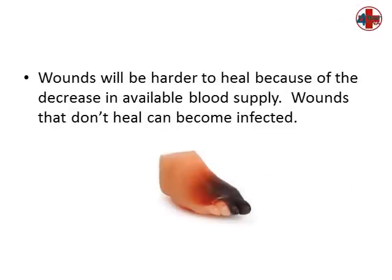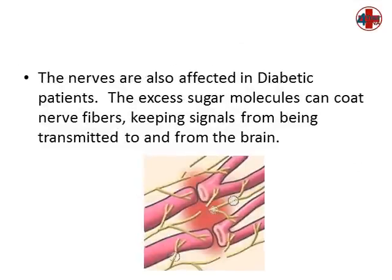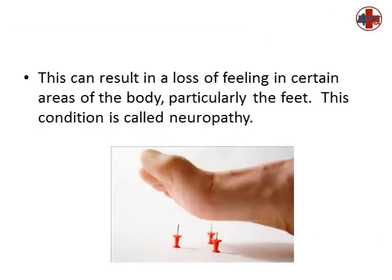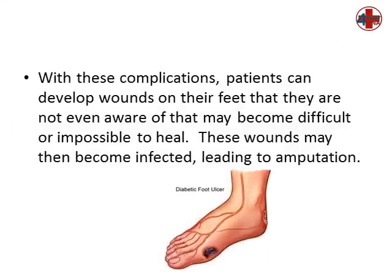Wounds will be harder to heal because of the decrease in available blood supply, and wounds that don't heal can become infected. The nerves are also affected in diabetic patients. The excess sugar molecules can coat the nerve fibers, keeping signals from being transmitted to and from the brain. This can result in a loss of feeling in certain areas of the body, particularly the feet. This condition is called neuropathy. With these complications, patients can develop wounds on their feet that they are not even aware of, which may become difficult or impossible to heal, leading to amputation.